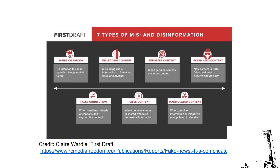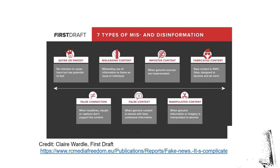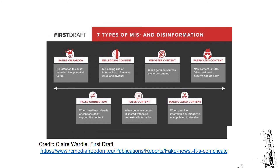Two: misleading content. That is, content used to frame issues or individuals in a way that is misleading — not in a real way. They give us part of the truth but not all of the truth, so that when we start reading on, we form a judgment about a person or a situation which is based on misinformation.